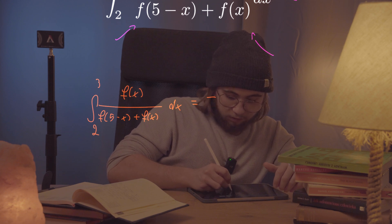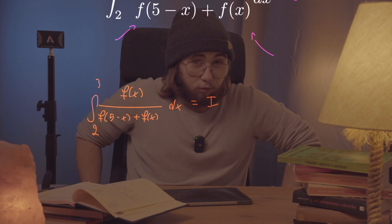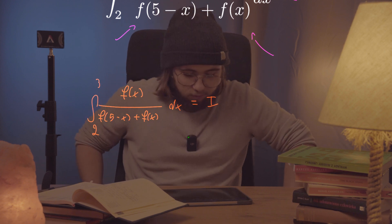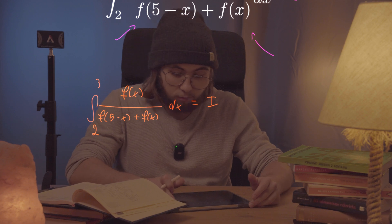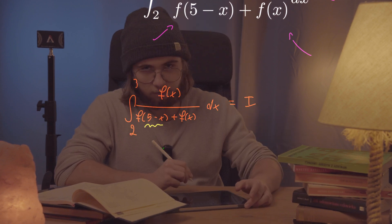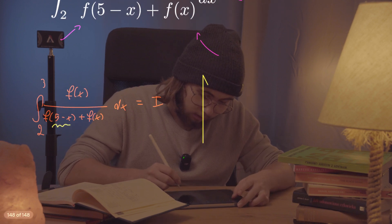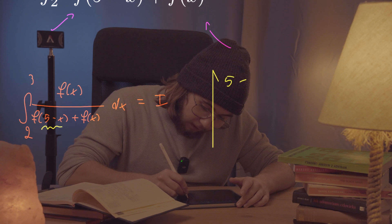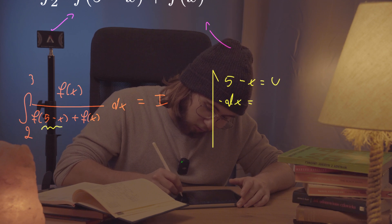I would like to do a u-substitution — why not, let's try it. I would like to make a substitution of five minus x equal to u. So five minus x equals u, which will give me negative dx equal to du.